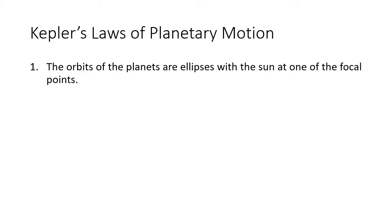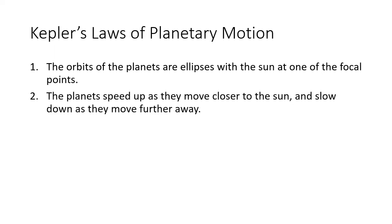Kepler's first law tells us that the planets don't move in circles, as used to be believed, but in ellipses, and the Sun is not in the middle — it's at one of the focal points. In reality, the ellipses are so close to being circles that it took high-quality observation before we were able to tell the difference.